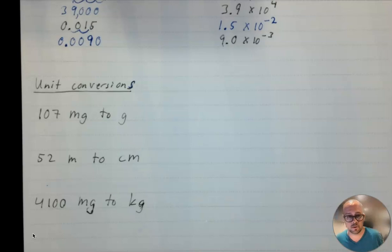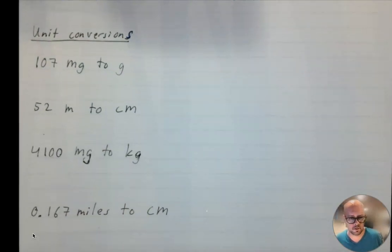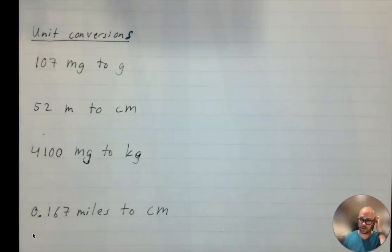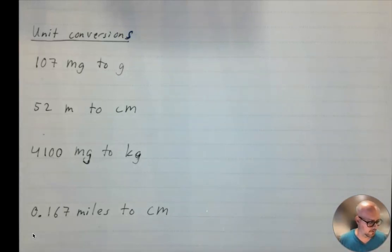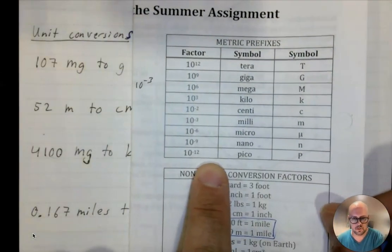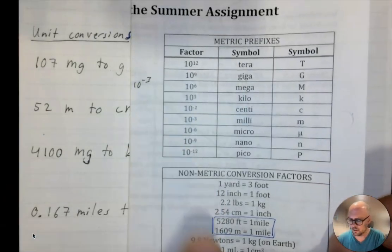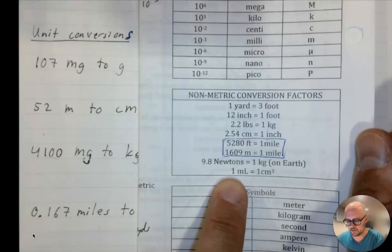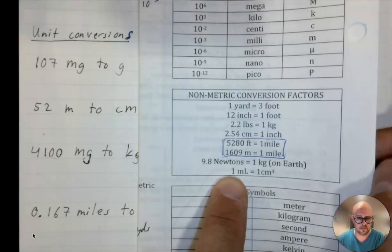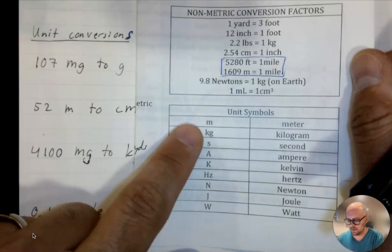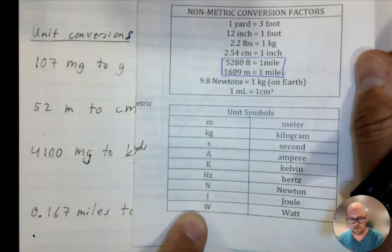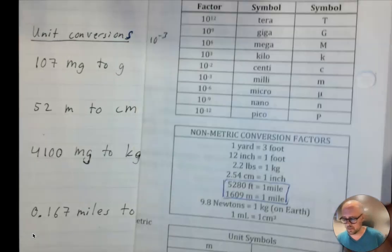This next part is about unit conversions — we start off with metric, then go to non-metric. A lot of you know your metric prefixes, and that's great. You don't need to watch this part unless you want to see how I do it using the reference sheet. On your AP Physics 1 equation sheet is a table of metric prefixes and the factors they represent. There are also some non-metric conversion factors I selected, and a lot of that information will be on your equation sheet as well.